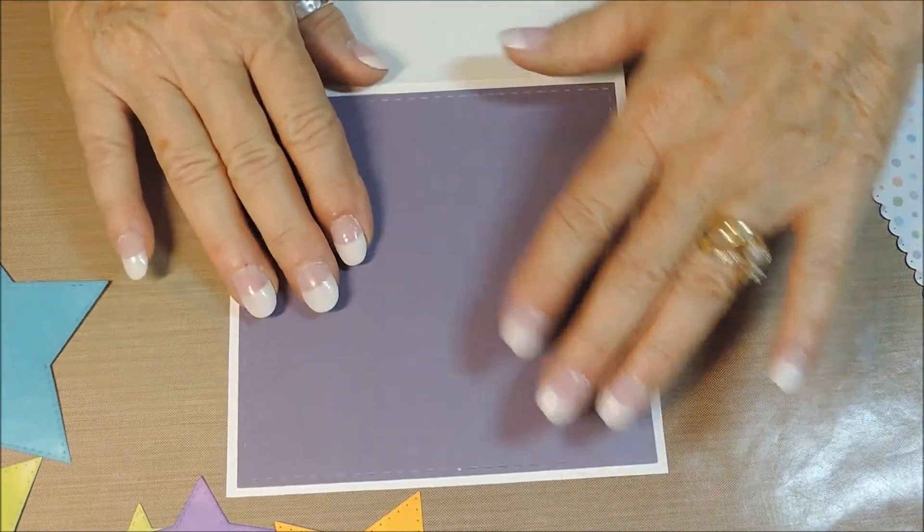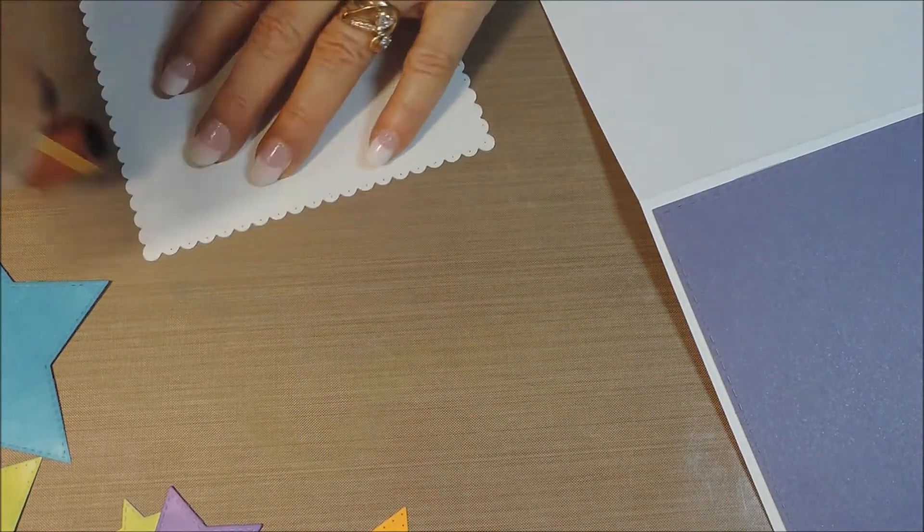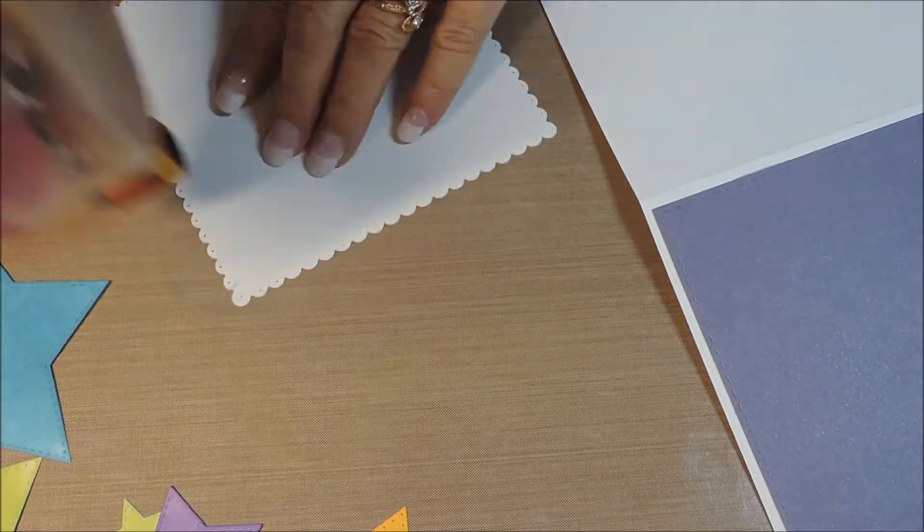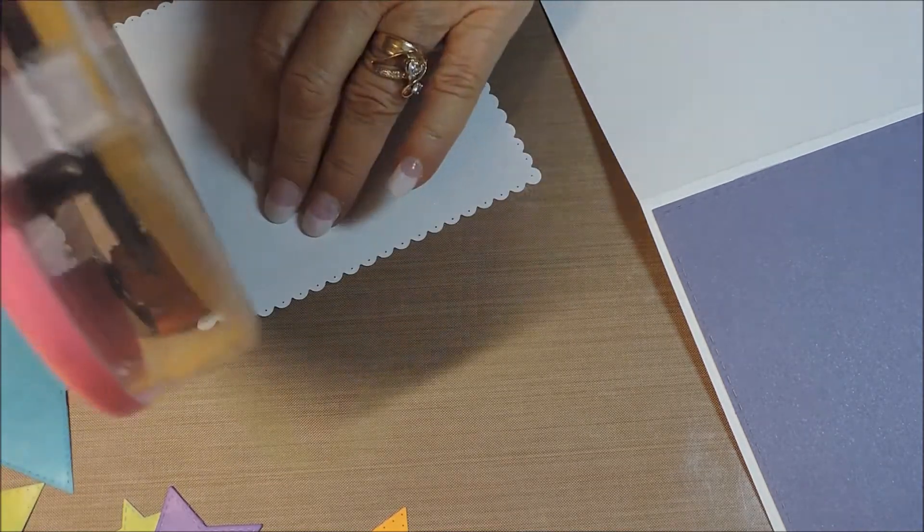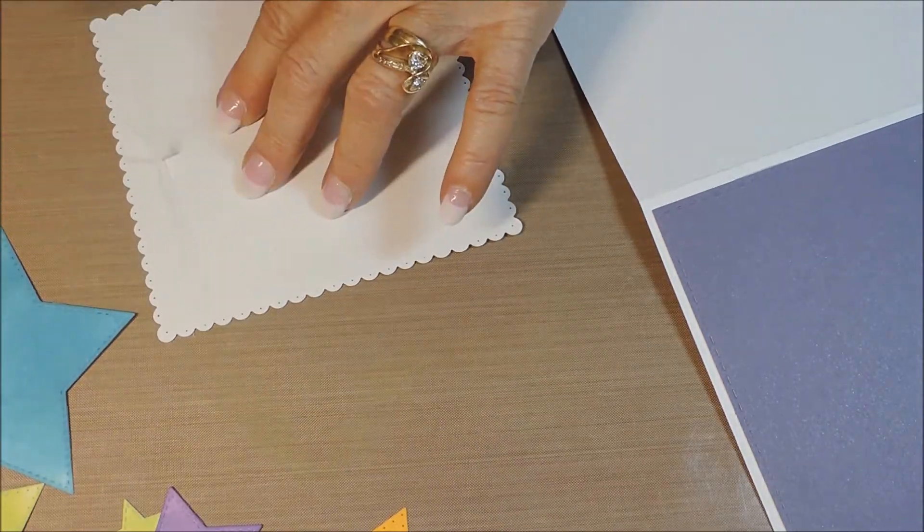Next we're going to add our scallop piece. After adding adhesive, simply line it up within the stitch marks of the purple panel. These dies are designed to layer perfectly one on top of the other, leaving the perfect edge all around.